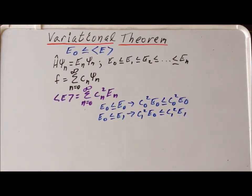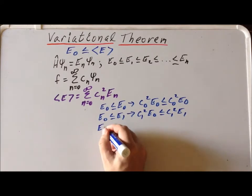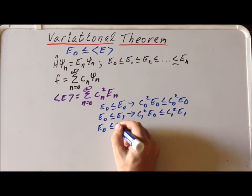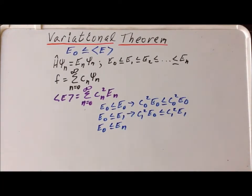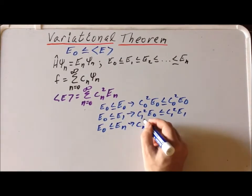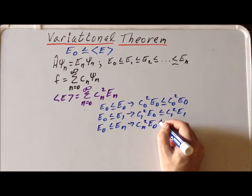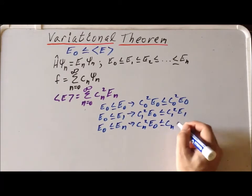And we can do this for any of the eigenvalues. So e sub n is going to be greater than or equal to e sub 0. That tells us that c sub n squared times e sub 0 is less than or equal to c sub n squared times e sub n.